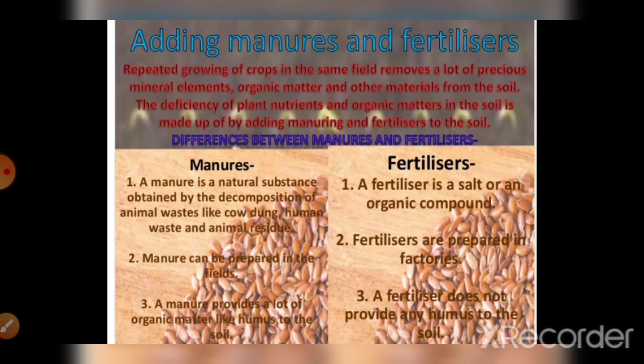The next step is manure and fertilizer addition. Once the seed is sown, we need to nourish the soil because the seed is growing and requires nutrition for growth. The nutrients present in the soil are of two types: macronutrients and micronutrients. Macronutrients are present in large quantities — for example, phosphorus and nitrogen. Micronutrients are present in smaller percentages — for example, boron. We need to provide these nutrients to the soil by adding either manure or fertilizer, or both.